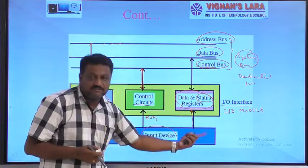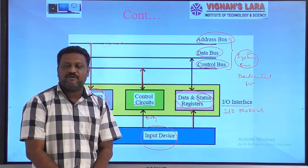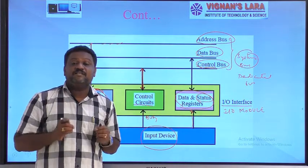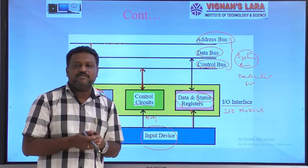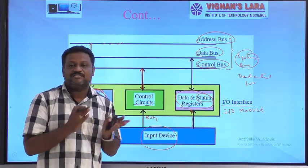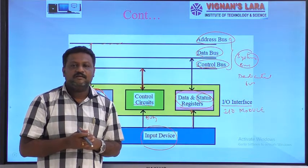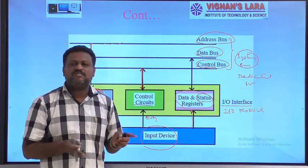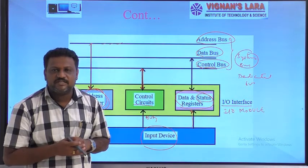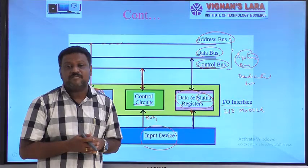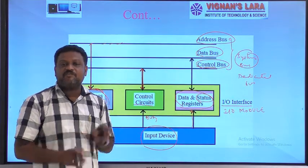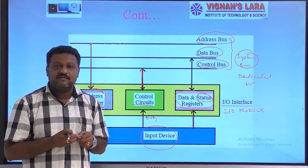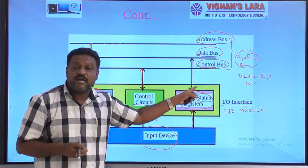The status information of the device is sent back to the processor via the data bus. Recalling previous classes, each I/O device has an internal buffer register. An input device has a buffer register called the data_in register, and an output device has a buffer register called the data_out register. Along with these, there is a status register containing a control bit or status bit, according to which the processor communicates with the devices.